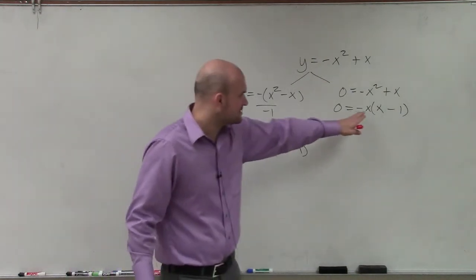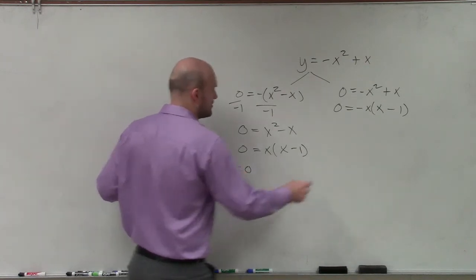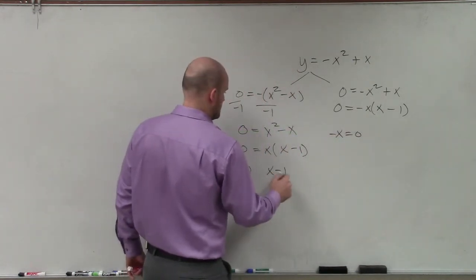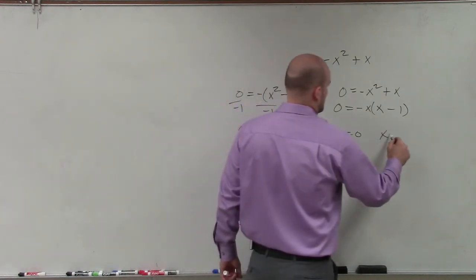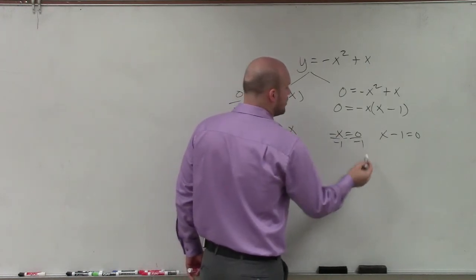Now what you notice is you say, well, these aren't the same. That's negative x and that's x. But again, if you apply the 0 product property, well, again, to solve for x here, since that's negative, I divide by negative 1. Well, 0 divided by negative 1 is just going to equal x equals 0.